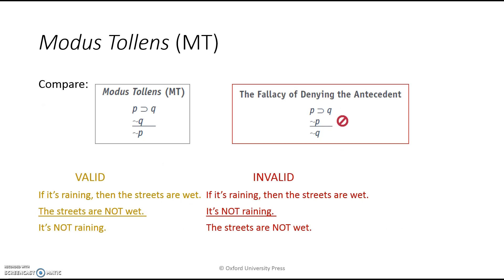The second implication rule is modus tollens. It starts the same as modus ponens — if P, then Q — but instead of asserting P, we say Q is not the case. So: if P, then Q; but not Q; therefore not P. Concrete example: If it's raining, then the streets are wet. But the streets aren't wet. Therefore, it must not be raining.